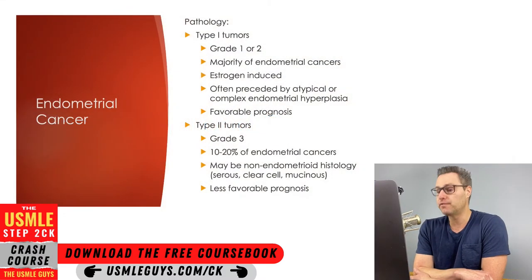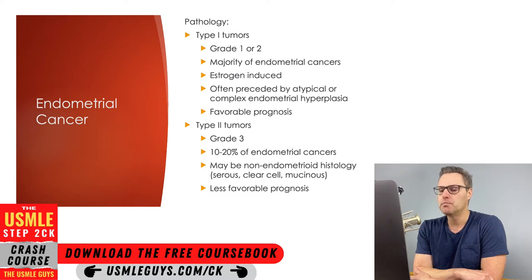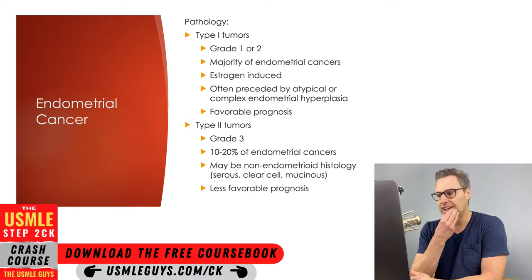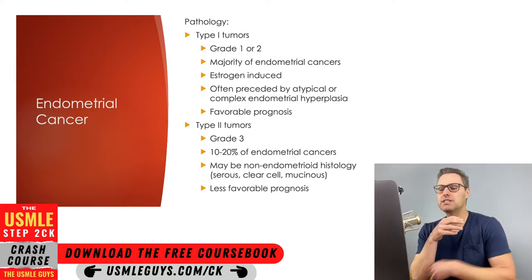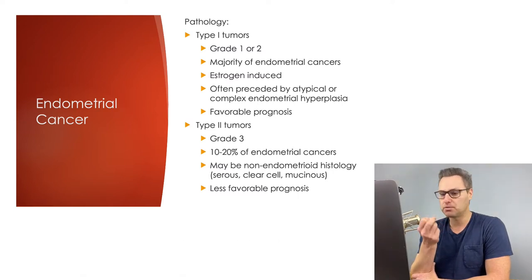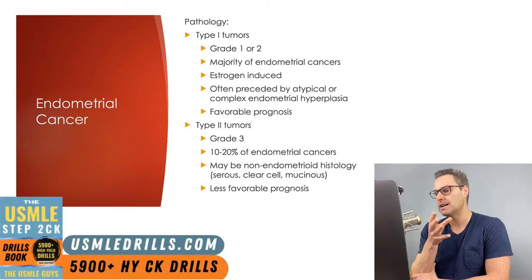Let's discuss the different types of tumors that make up endometrial cancer. The majority of cases of endometrial cancer result from type 1 tumors. These are considered to be grade 1 or 2 and are estrogen-induced. Many risk factors involve excess exposure to estrogen. Often, these tumors are preceded by hyperplasia of the endometrium, either atypical or complex, and this hyperplasia progresses to endometrial cancer.